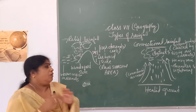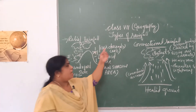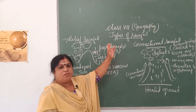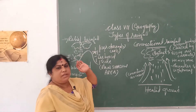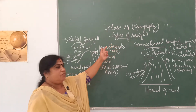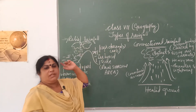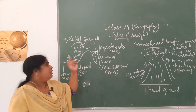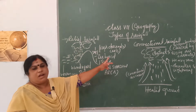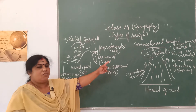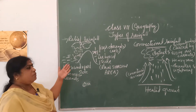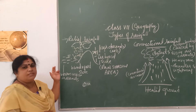Good morning children. Today we are dealing with the last section of the topic 'Air' — rainfall. The remaining topics we had already learned in the previous class. Today we will be learning the three types of rainfall: relief or orographic rainfall, convectional rainfall, and cyclonic rainfall. These are the three types of rainfall which we are going to deal with separately.